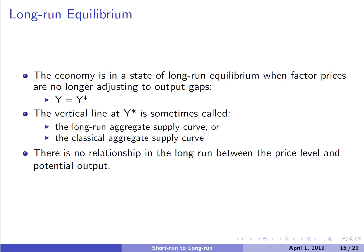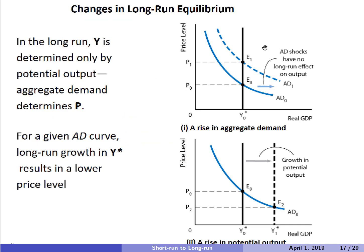Notice that there's no relationship between the price level and potential output. In panel one, a rise in aggregate demand — even if there's a shift in the AD curve — has no effect on potential GDP. The AD curve determines the price level in the long run, but long-run GDP equals potential GDP.